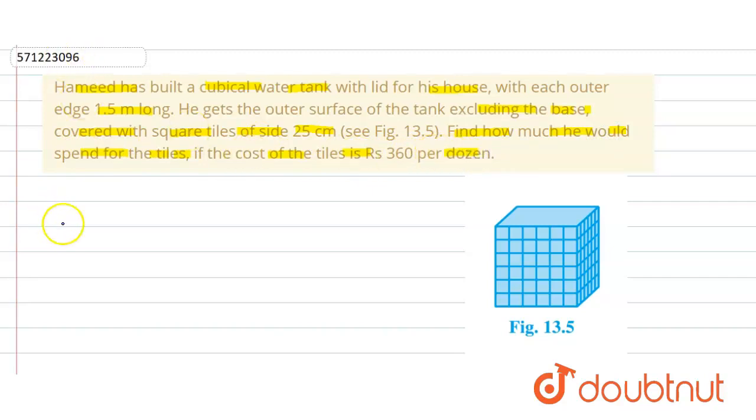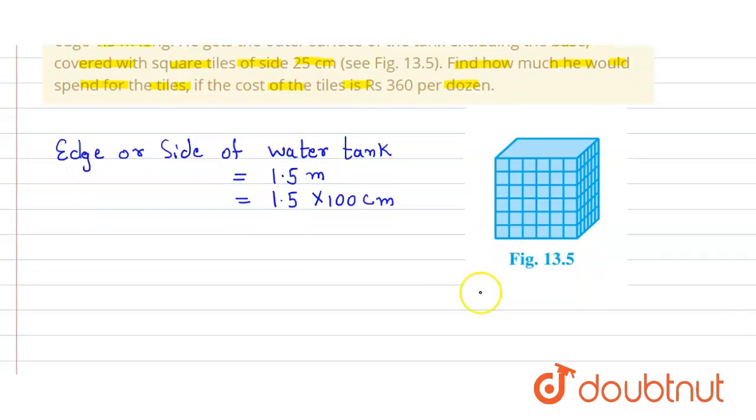So here it is given that the edge or side of the water tank is 1.5 meters. First we represent it in the form of centimeters. So here it will be 1.5 × 100 centimeters, because 1 meter equals 100 centimeters. So here we get 150 centimeters.